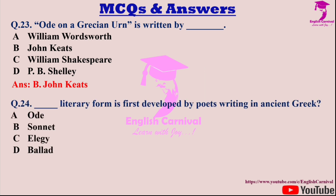Question twenty-four: Which literary form was first developed by poets writing in ancient Greek? Options are A: Ode; B: Sonnet; C: Elegy; and D: Ballad. Correct answer is A — the ode.